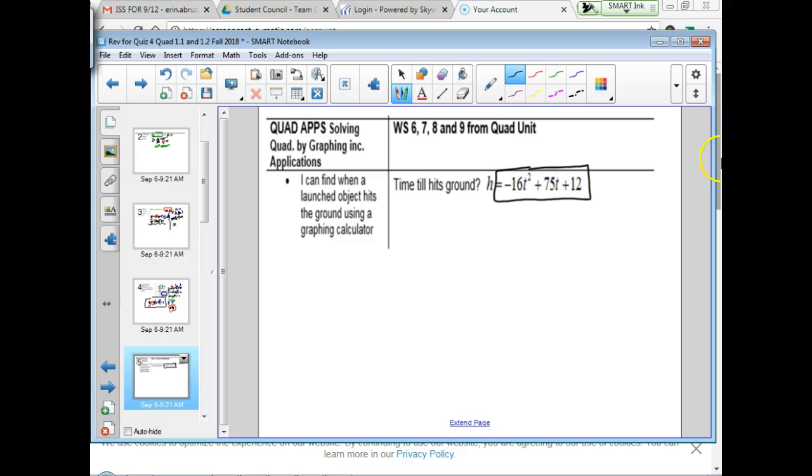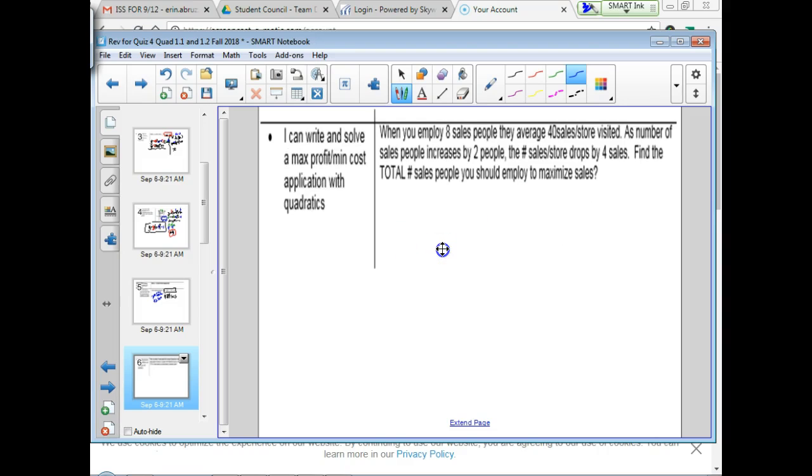So remember, you're going to be responsible for, you have to be able to know where on your calculator to go. So when it hits the ground is when you go to second trace and you choose number two, which is the zero finder. And you have to be able to execute those steps without any assistance from me. So keep that in mind.